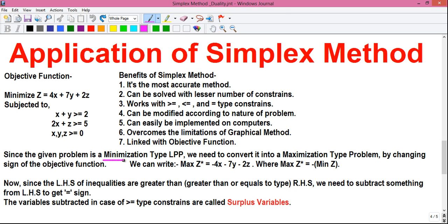So, since the given problem is a minimization type LPP or linear programming problem, we need to convert it into a maximization type problem by changing the sign of the objective function. Right now, the objective function is 4X plus 7Y plus 2Z.